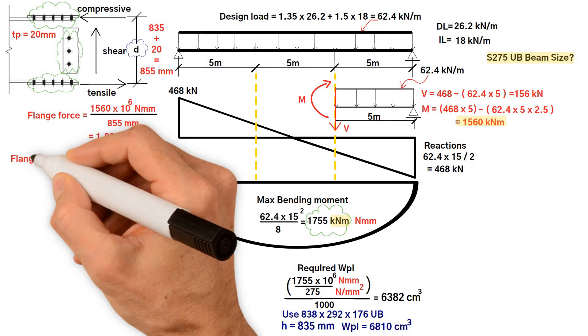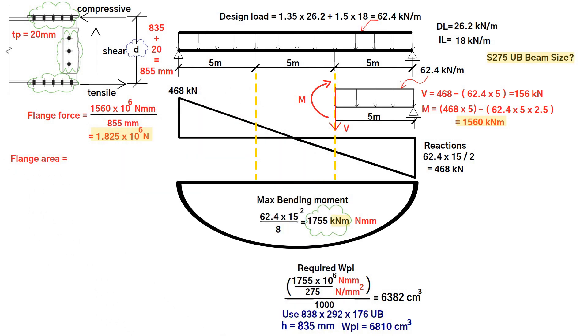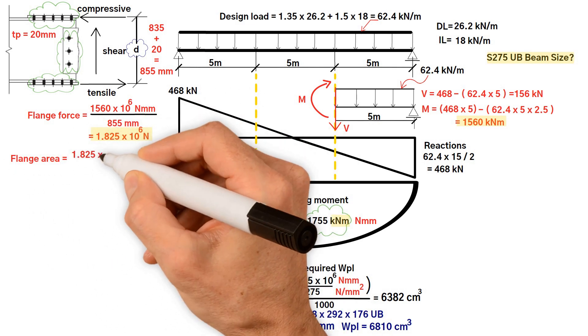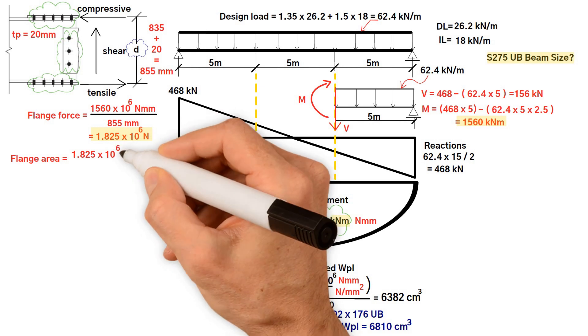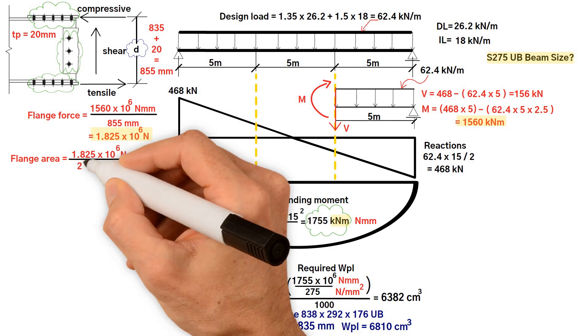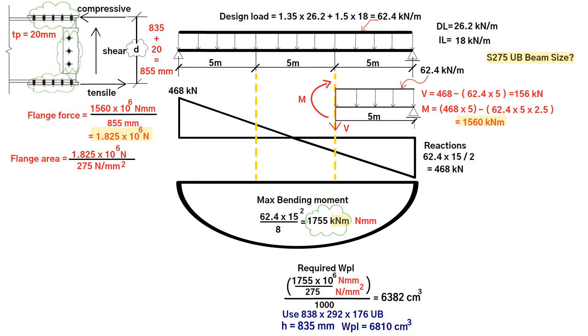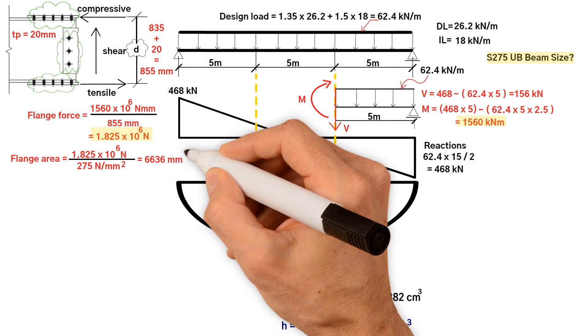Now let's work out the flange area, which equals the flange force 1.825 times 10 to 6 divided by the yield stress 275 equals 6636 millimeter squared.